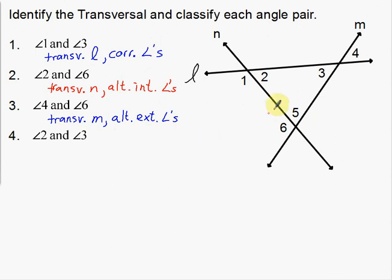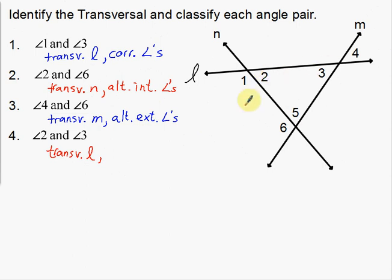Last: angles two and three. Angle two is right here, angle three is right here. My transversal to help create both of them is L, so the transversal is line L. Notice that they're on the same side of the transversal, and they're both on the inside of the intersections. So this would be Same Side Interior Angles.